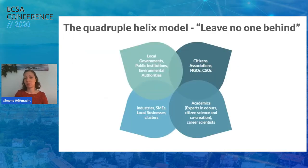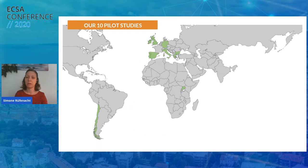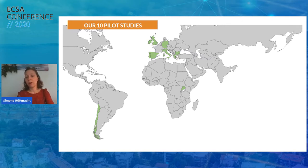Principle 10 is central to the D-NOSE methodology — it states that citizens should be included in handling environmental issues and that public awareness and participation should be encouraged through making information openly accessible. The Sustainable Development Goals are also central, especially those about good health and well-being, sustainable communities, and partnership — essentially 'leave no one behind.' Within our project we have the quadruple helix model, which includes citizens and citizen associations, academics and odor experts, industries and SMEs, and local governments and regulatory authorities.